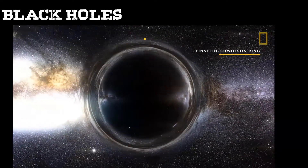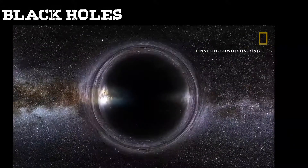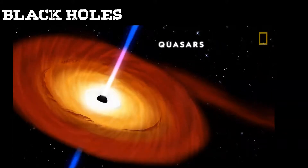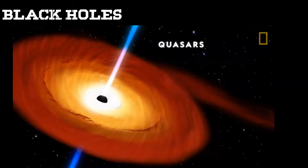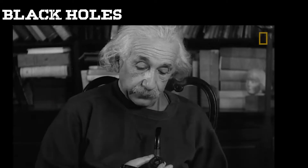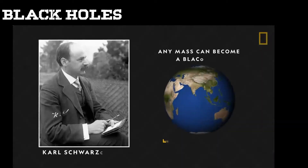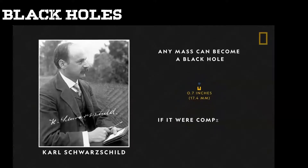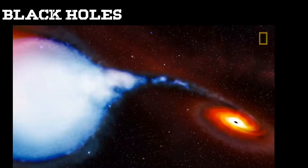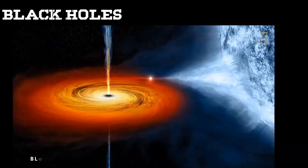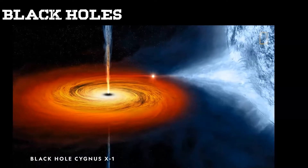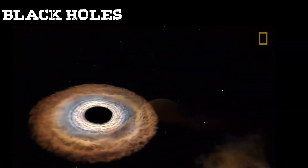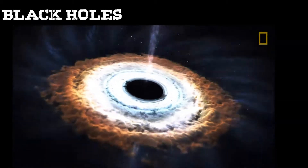Because black holes are invisible, scientists can only detect and study them by observing their effect on nearby matter — including accretion disks, a disk of particles formed when gases and dust fall toward a black hole, and quasars, jets of particles blasting out of supermassive black holes. In 1916, using Einstein's general theory of relativity, Carl Schwarzschild calculated that any mass could become a black hole if compressed tightly enough. Theory became reality in 1971 when astronomers studying the constellation Cygnus discovered the first black hole. Countless black holes are scattered throughout the universe, constantly warping space and time.